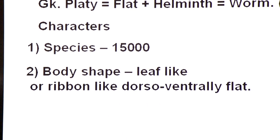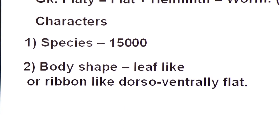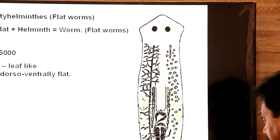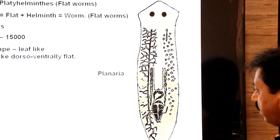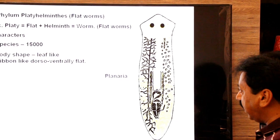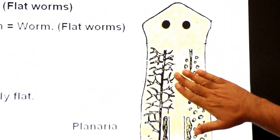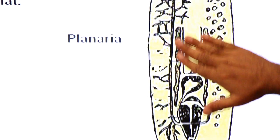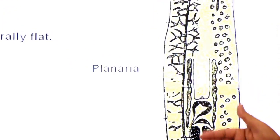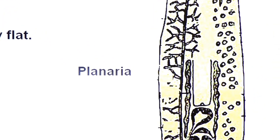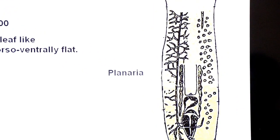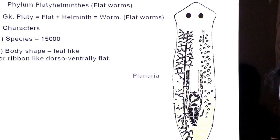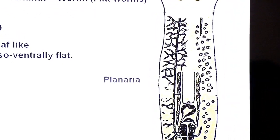That is why they are called flatworms. This is the diagram showing Planaria, a member of phylum Platyhelminthes. The body of Planaria is flat from the dorsal side as well as the ventral side, and all other members of this phylum are also dorso-ventrally flat.